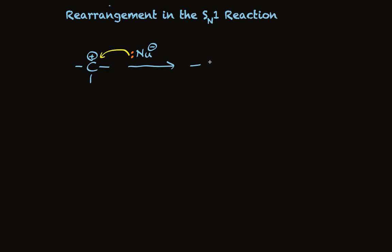That carbocation becomes stabilized by getting a pair of electrons from the nucleophile. That's good. But that's not the only way a carbocation can gain some stability. In cases where a carbocation could rearrange to make a tertiary carbocation from a secondary carbocation, that will happen as a way to become more stable.